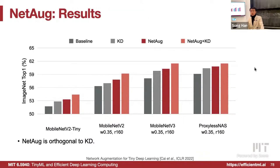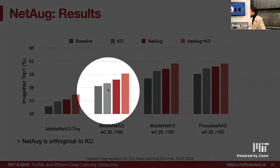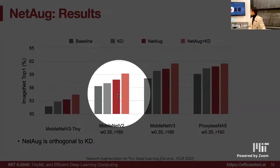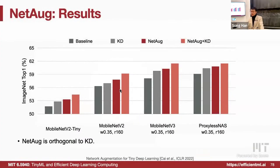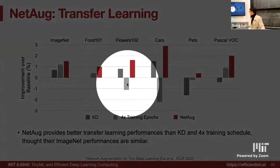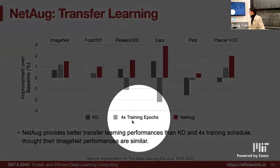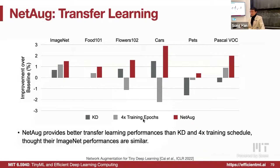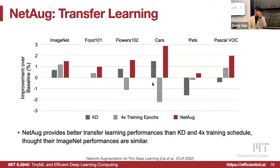Network augmentation is actually orthogonal to knowledge distillation. The left bar is the baseline, then knowledge distillation, then network augmentation, and then network augmentation plus knowledge distillation working together. For transfer learning, comparing knowledge distillation versus training 4x longer — sometimes accuracy hurts using these techniques, but using network augmentation provides better transfer learning performance than both knowledge distillation and 4x training schedule.